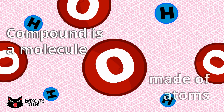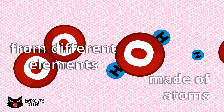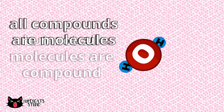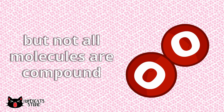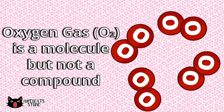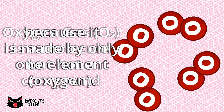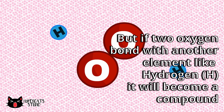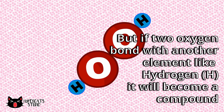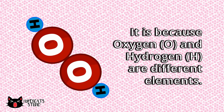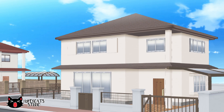A compound is a molecule made of atoms from different elements. Remember that all compounds are molecules, but not all molecules are compounds. For example, oxygen gas is a molecule but not a compound because it is made of only one element. But if two oxygen atoms bond with another element like hydrogen, it will become a compound, because oxygen and hydrogen are different elements.